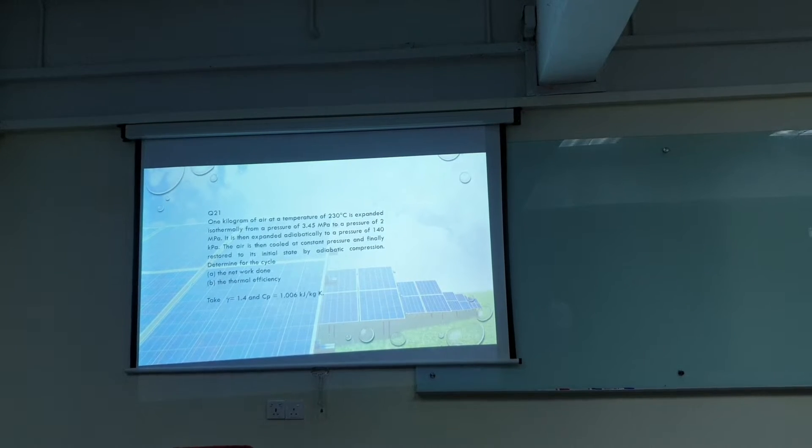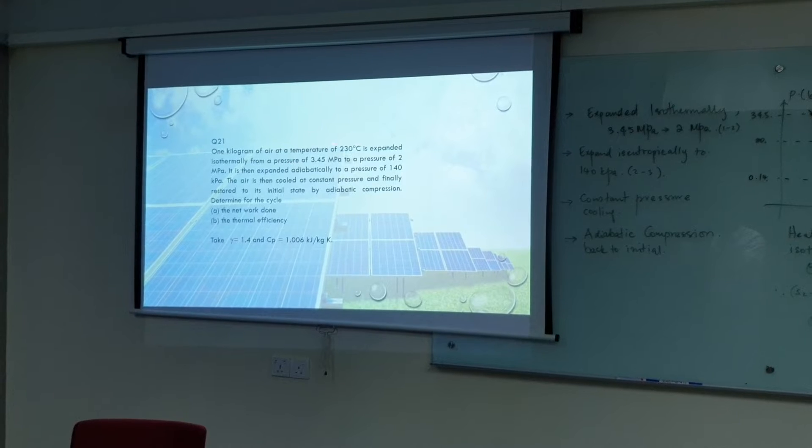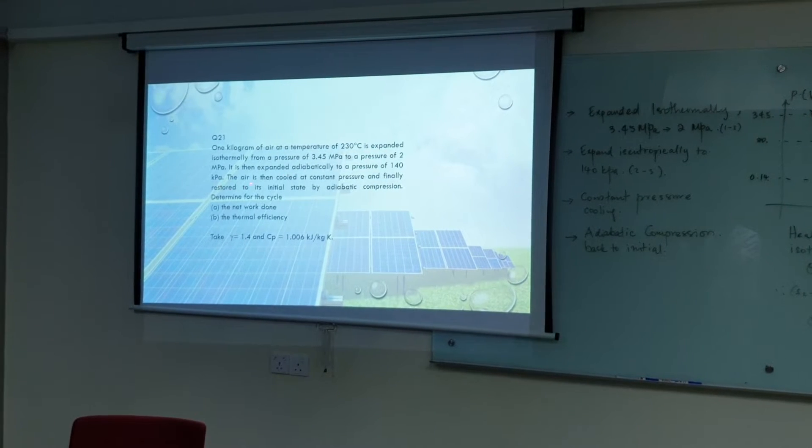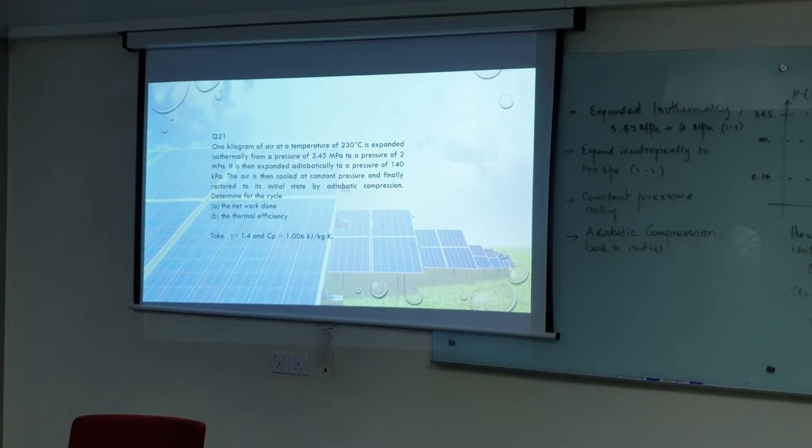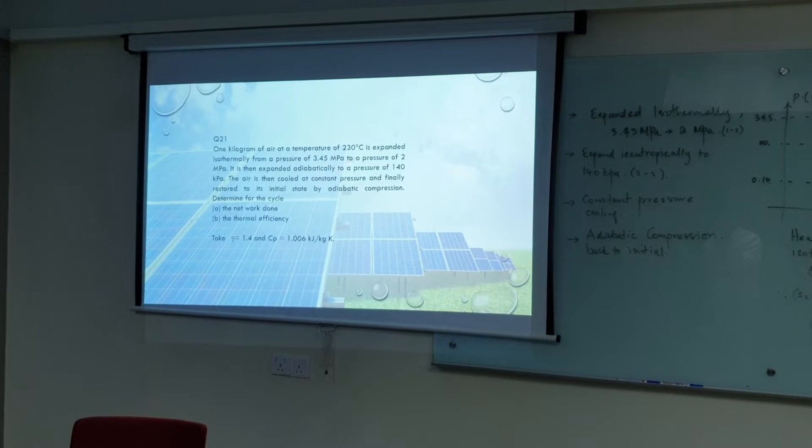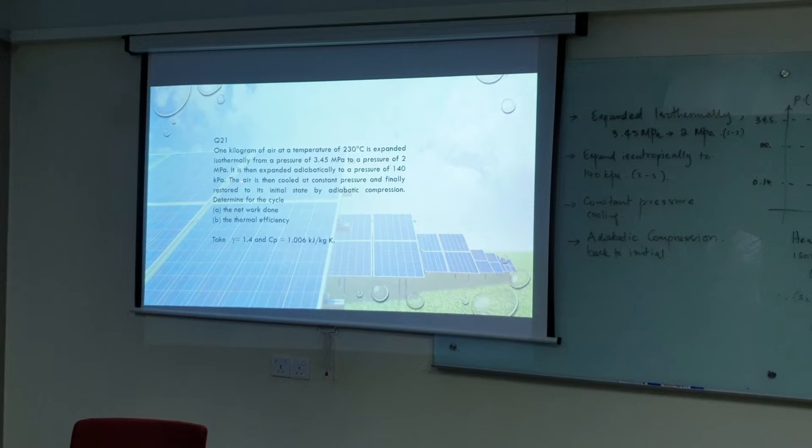Determine for the cycle the network done and the thermal efficiency. The diagram of air at temperature 230°C is expanded isothermally from a pressure of 3.45 MPa to a pressure of 2 MPa.